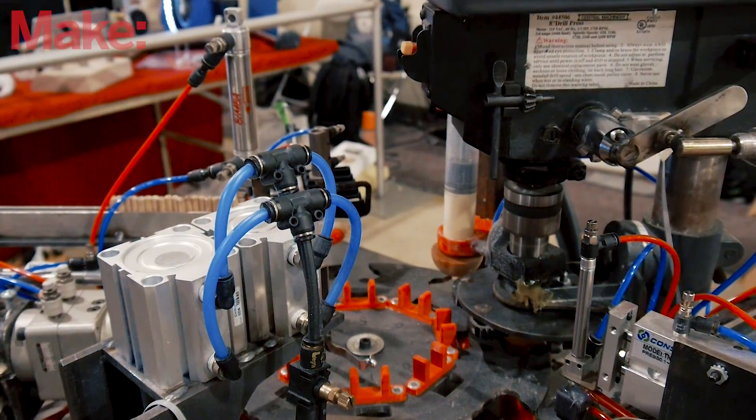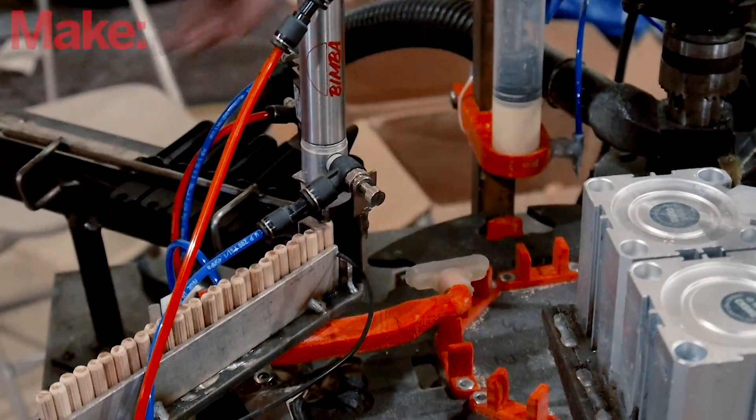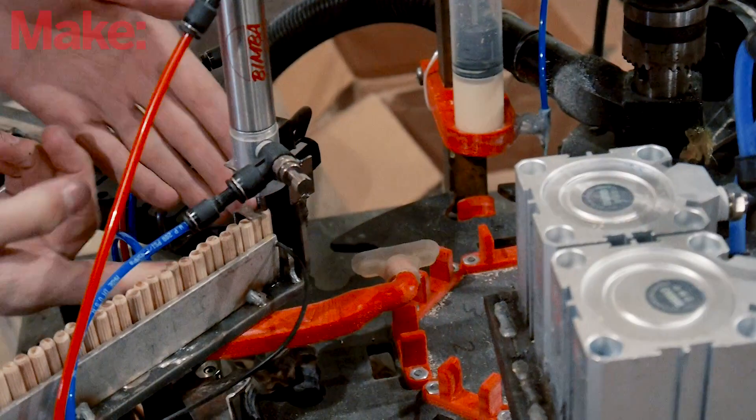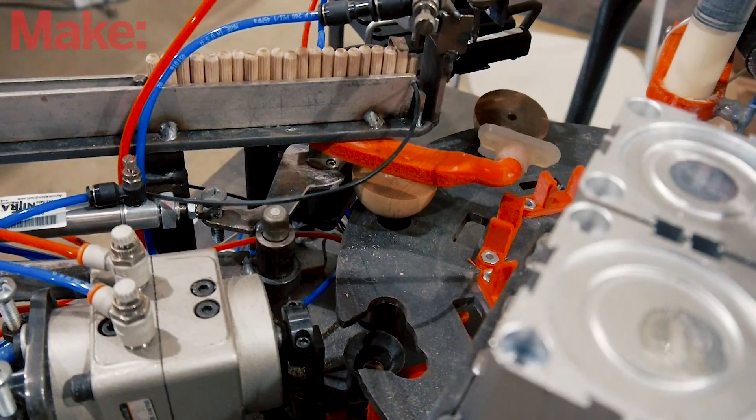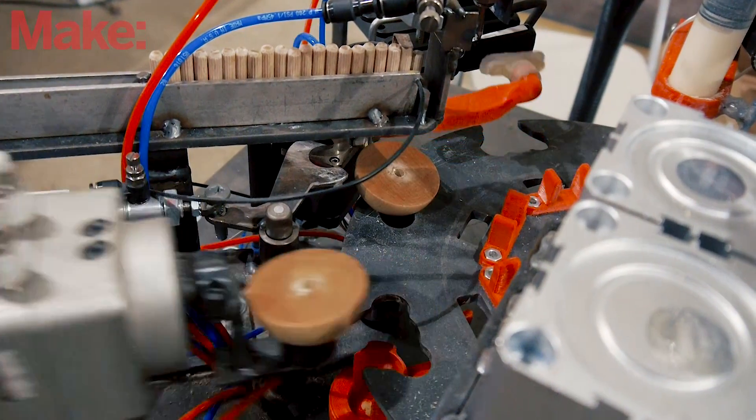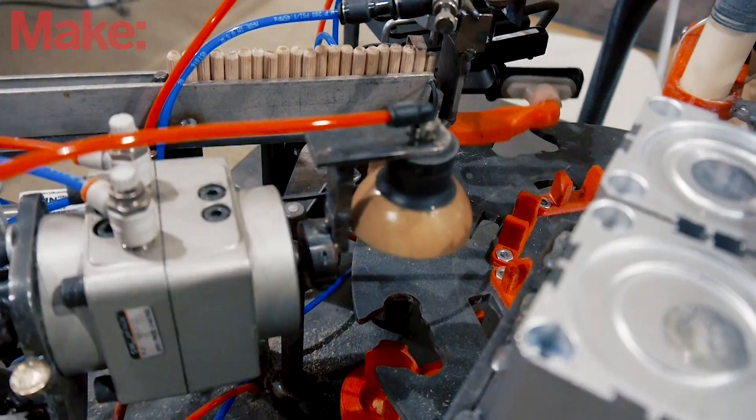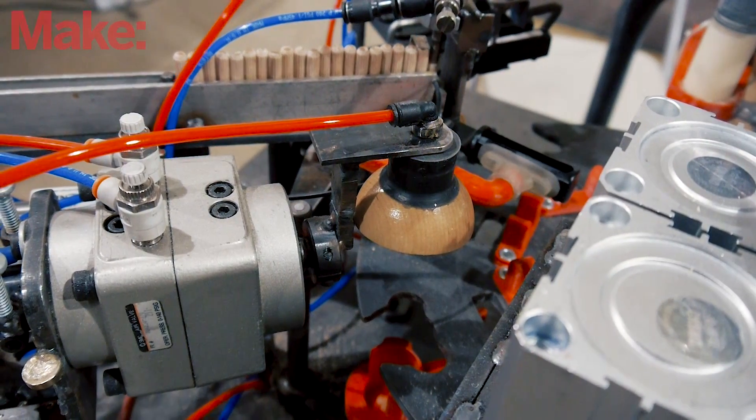It moves on twice to this station, which for the first one it just flattens it against the top. Then the first part that goes through gets to here, it picks it up, rotates it around, and waits for this station to be done.